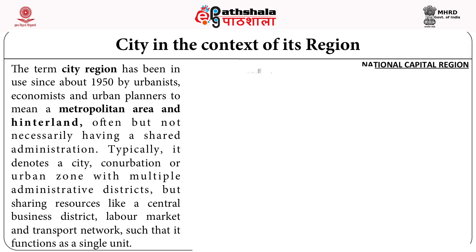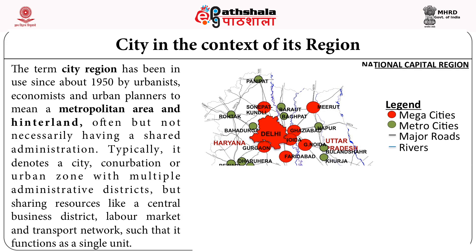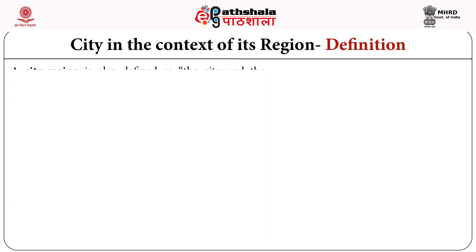This figure shows the National Capital Territory of Delhi, surrounded by parts of various states — part of Uttar Pradesh, part of Haryana, part of Rajasthan. Delhi is the focal point, the mega city, surrounded by other metropolitan cities, then smaller cities, and networks of major roads and rivers. This is the region of the National Capital Region.